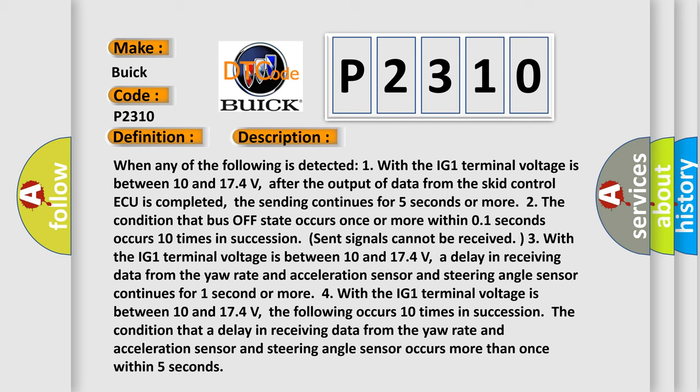Two, the condition that bus off state occurs once or more within one second occurs 10 times in succession. Sent signals cannot be received.